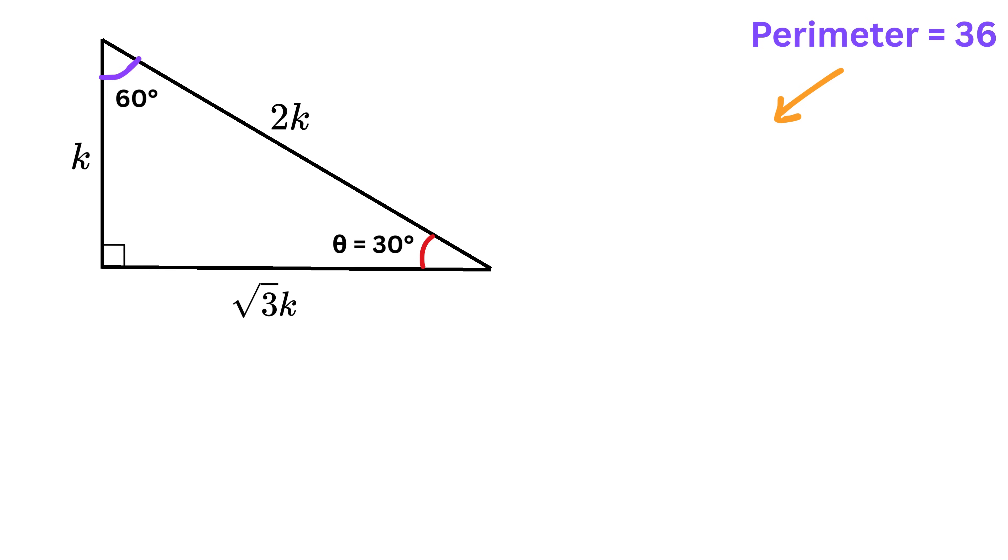Therefore, the perimeter, which is the sum of those three side lengths, will be k plus 2k plus root 3k, or 3k plus root 3k. So it becomes k multiplied by 3 plus root 3. That total must be equal to 36, because the problem gives the perimeter as 36 units.